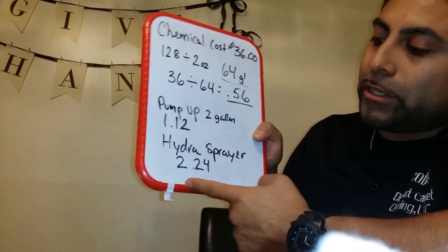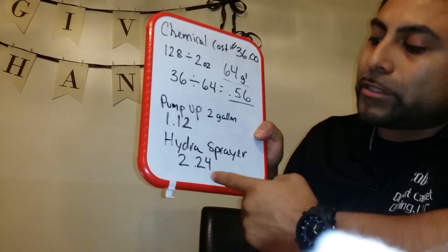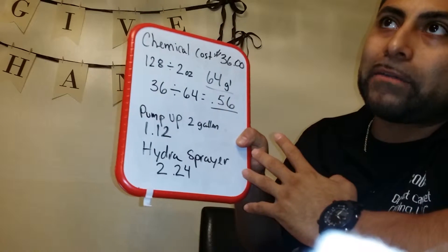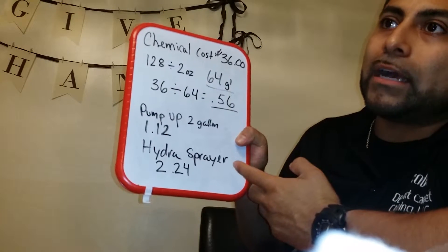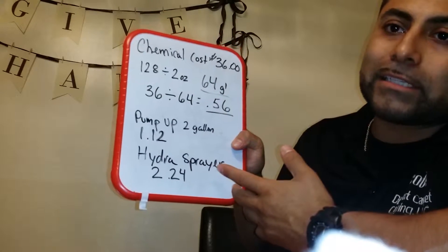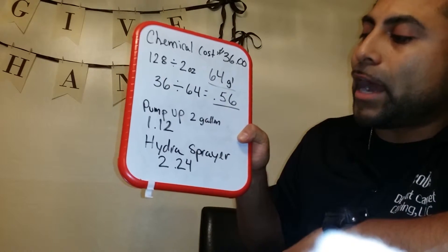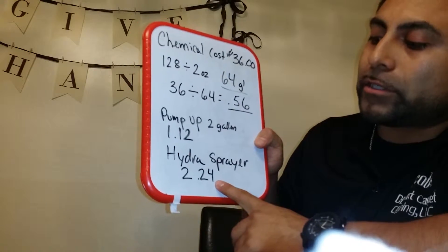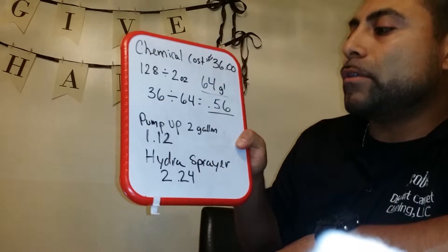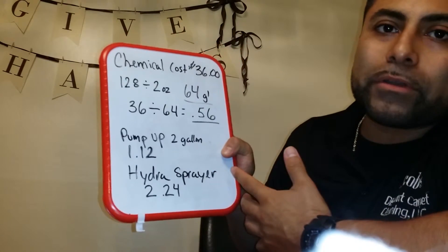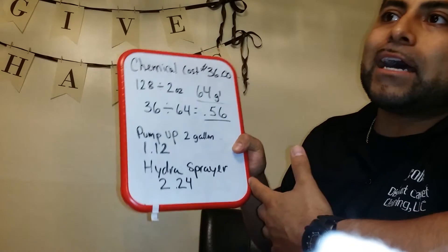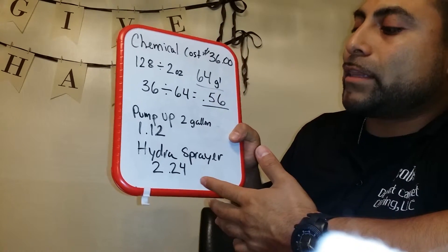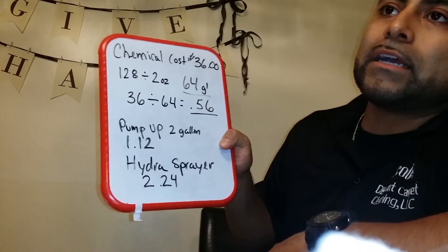For the HydroForce, you're spending $2.24 because it's about four quarts — you dilute about eight ounces into the HydroForce sprayer. So that's $2.24. That's important. It adds up, and you want to make sure that you calculate that into your cost.